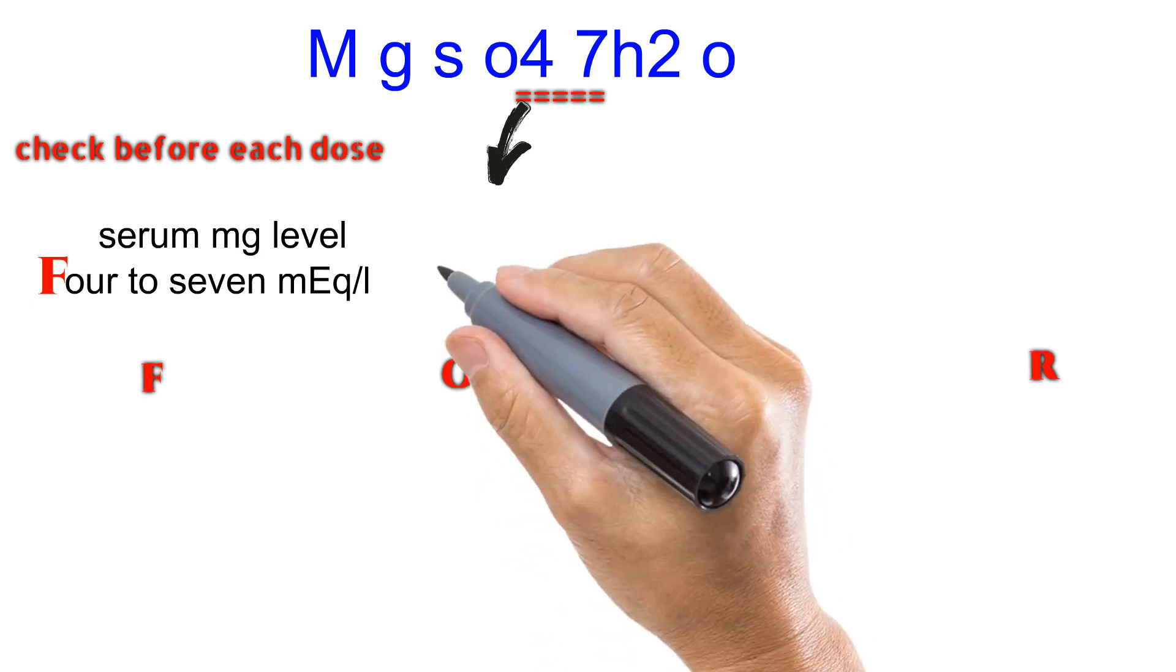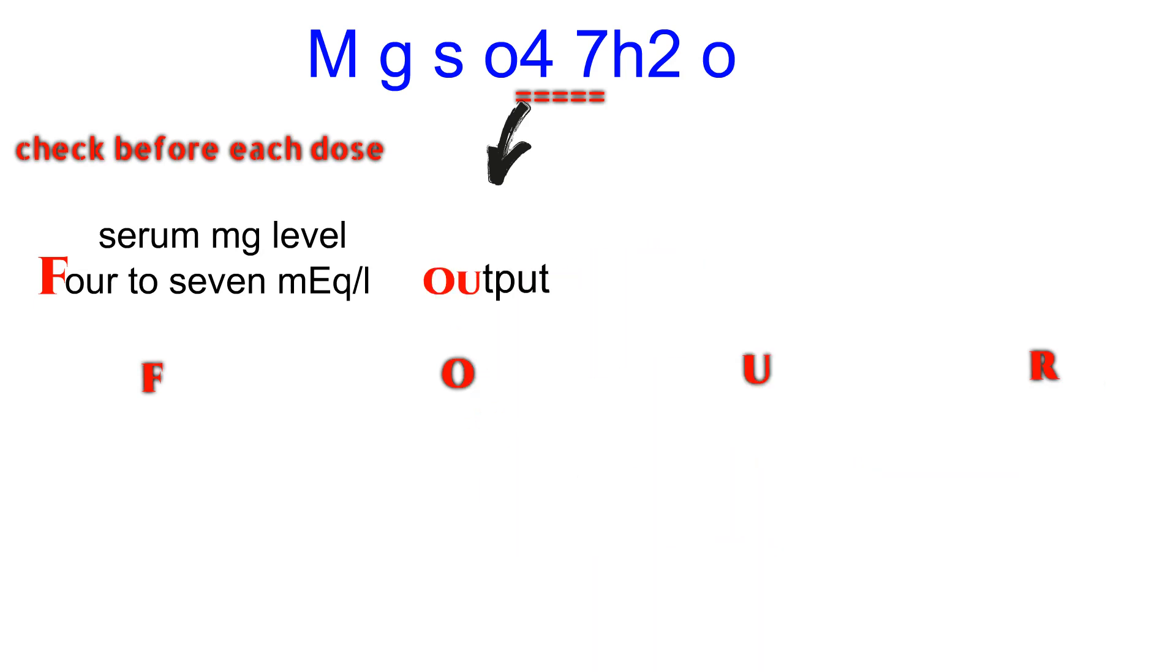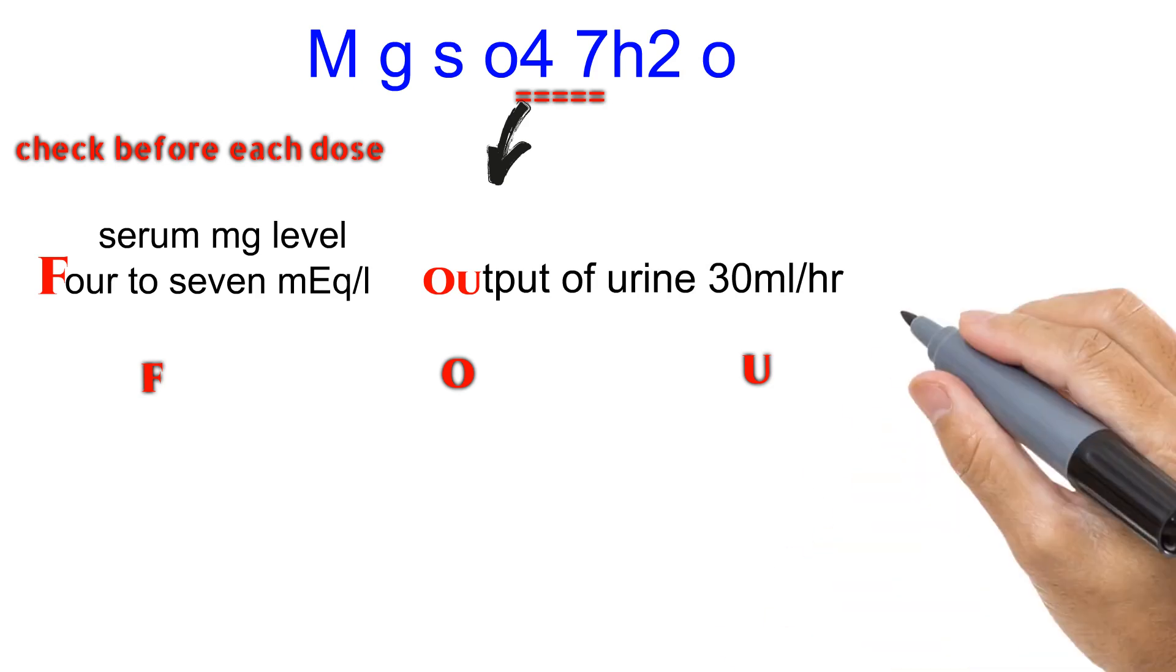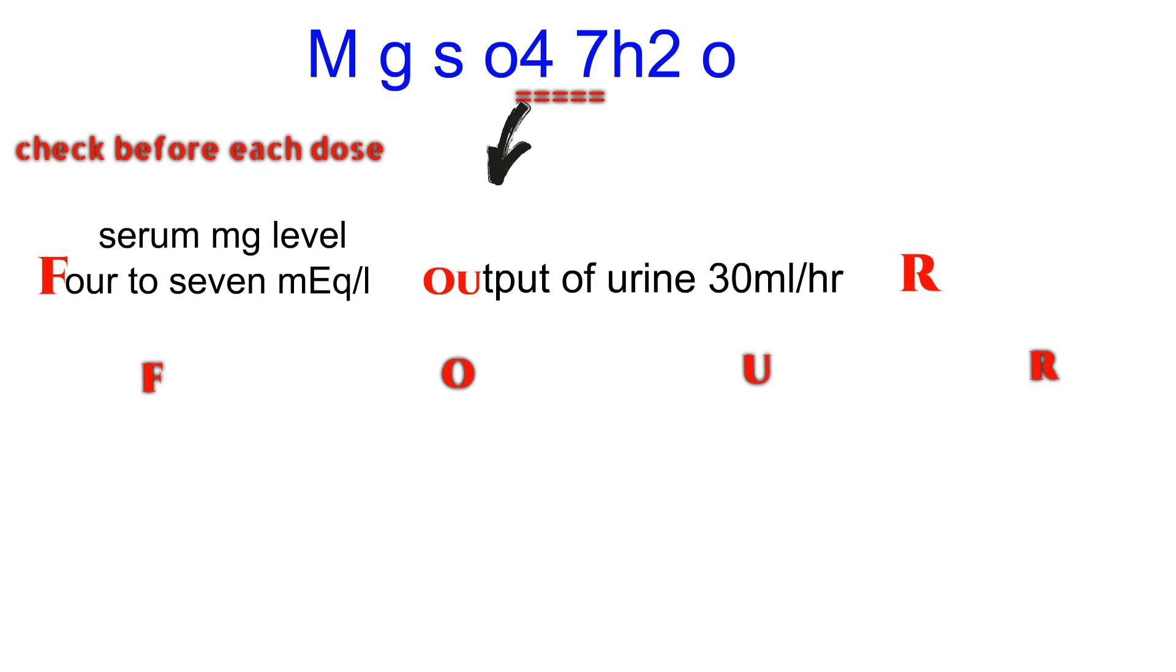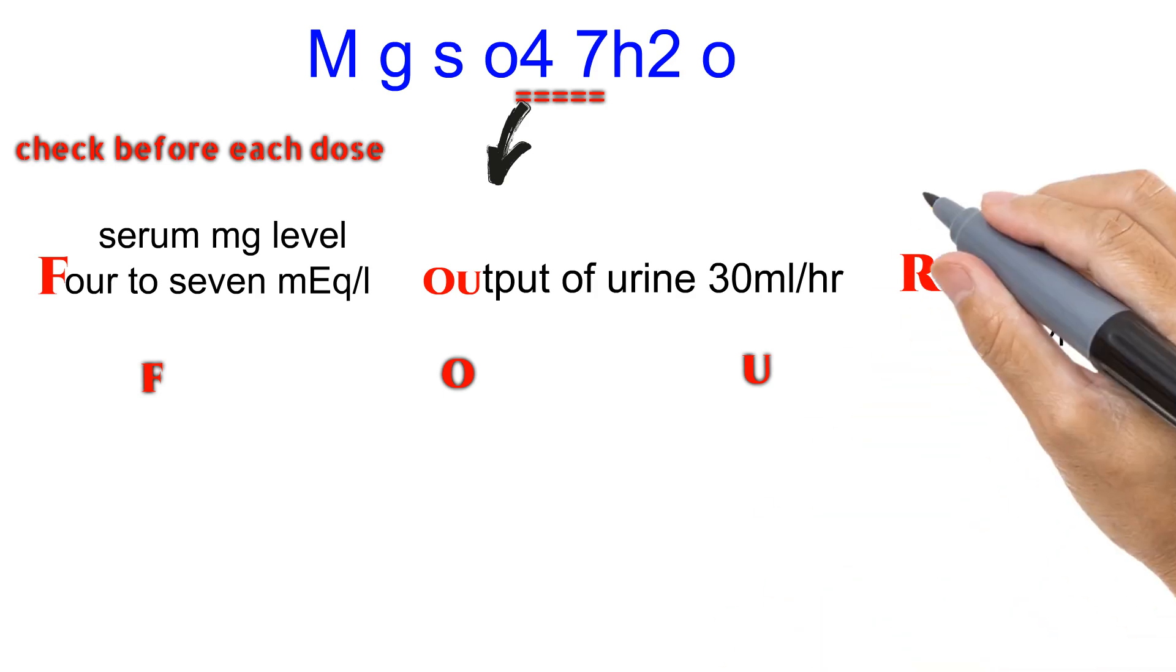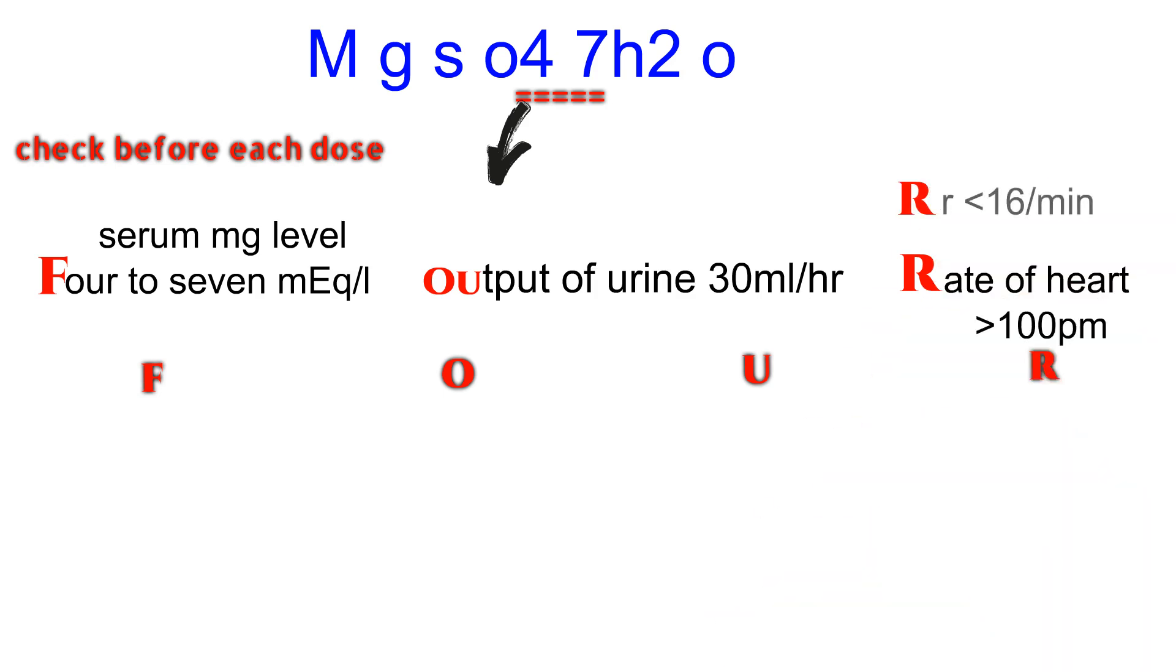Four things must be checked before each dose. The F letter: 4 to 7 serum magnesium level milliequivalents per liter. The O and U letters: output of urine more than 30 ml per hour because magnesium is almost exclusively excreted in the urine. The R letter represents rate of heartbeats more than 100 per minute. The rate of respiration is not less than 16 per minute. The reflex of the patella is still present.